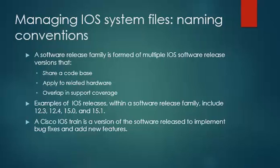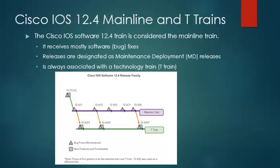Examples of IOS releases within a software release family include 12.3, 12.4, 15.0, and 15.1. A Cisco IOS train is a version of software release used to implement bug fixes and add new features. The Cisco IOS 12.4 train is considered the mainline train. The mainline train receives mostly software bug fixes with the goal of increasing software quality, and its releases are designated as maintenance deployment releases.